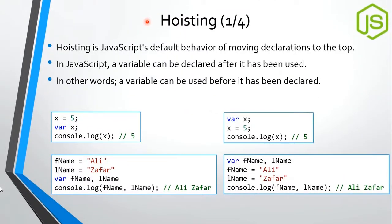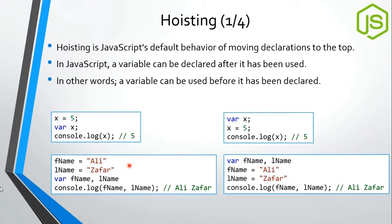Before discussing ES6 classes further, we need to understand hoisting. Hoisting is a JavaScript default behavior that moves declarations to the top automatically. In JavaScript, a variable can be declared after it has been used. You can assign a value first, then declare, then use it — unlike other languages where you declare first, then assign, then use. This works because JavaScript automatically hoists declarations.